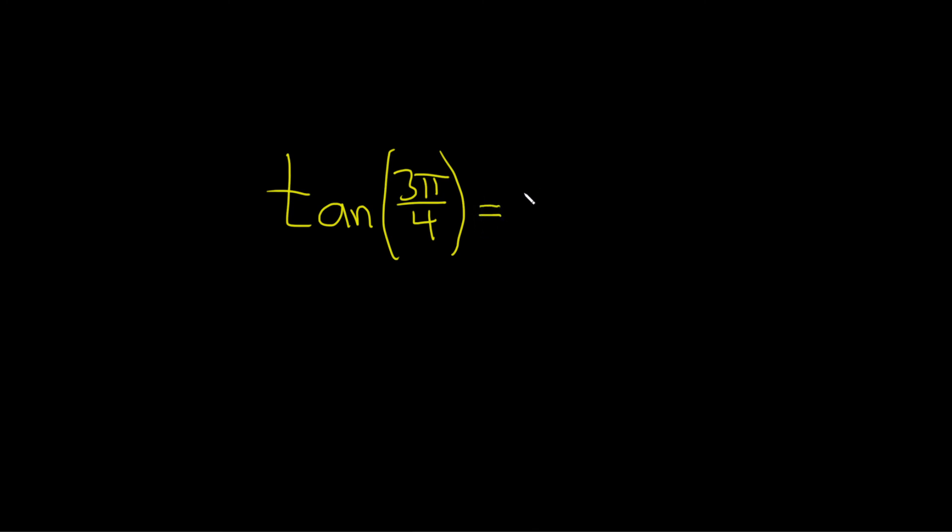Because it's tangent, I like to rewrite it in terms of sine and cosine. This is sine of 3 pi over 4 over the cosine of 3 pi over 4.